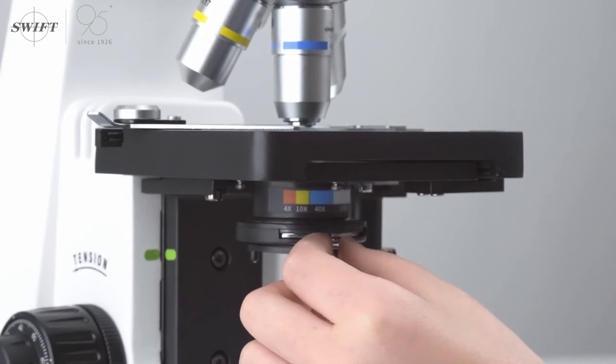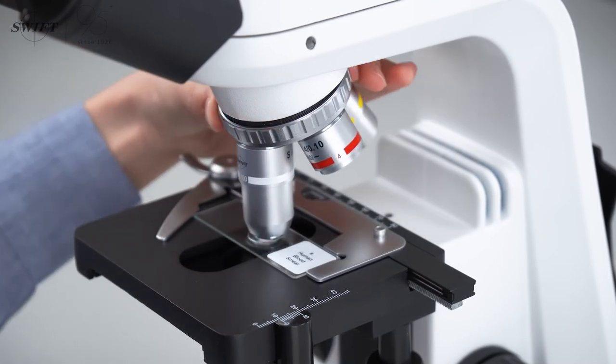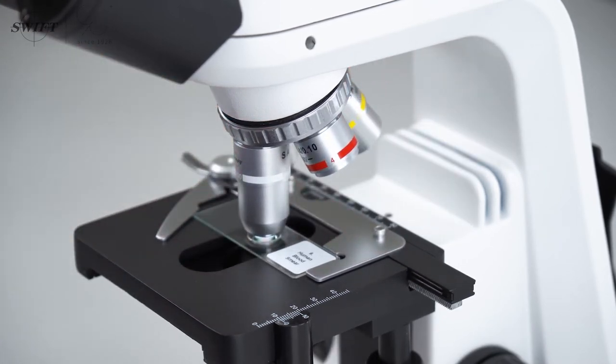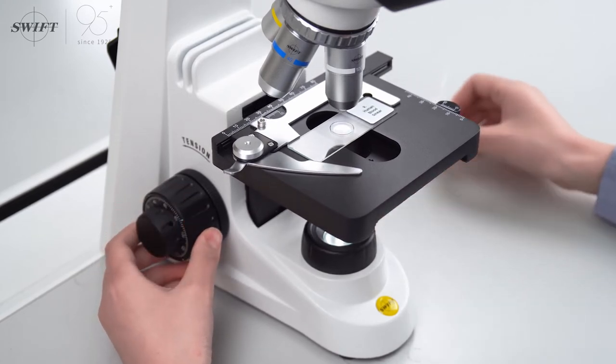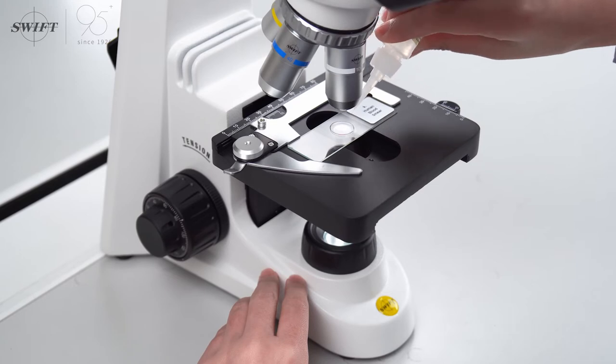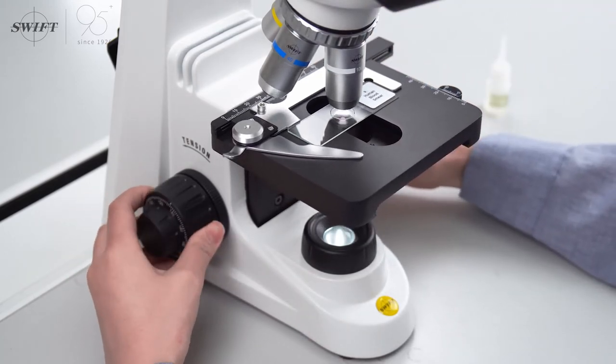When using the 100x objective lens to observe cells in oil immersion, first lower the stage. Drop in cedar oil, then raise the stage and lightly touch the 100x objective lens to remove possible air bubbles.